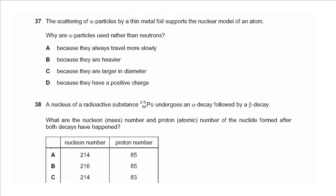Question 37 says the scattering of alpha particles via thin metal foil supports the nuclear model of an atom. Why are alpha particles used rather than neutrons? Not because they travel more slowly, not because they are heavier, not because they are larger in diameter — but because they have positive charge. They are charged and will be affected by any other charge, so the answer is D.